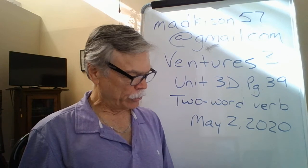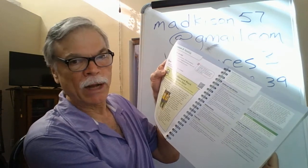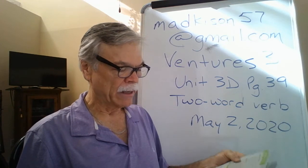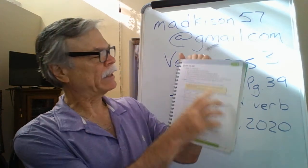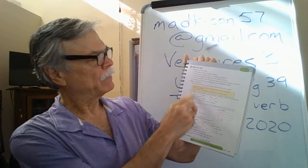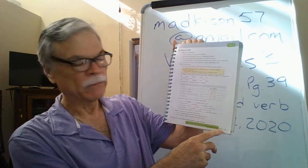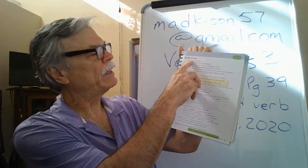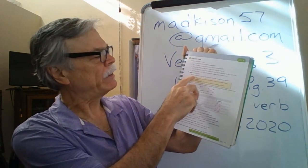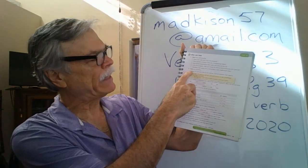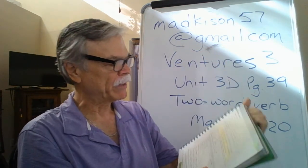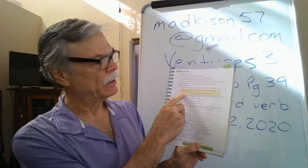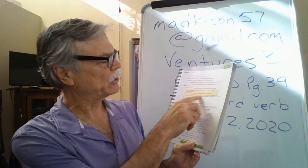We're also going to use the Neighborhood Watch success story to find the two-word verbs that are going to be in this exercise, exercise three, on page 39. So if you could turn to page 39, exercise three — it starts with 'After You Read' and we're on part B, 'Build Your Vocabulary.' I'd like to take a look at this entry here in the vocabulary section.